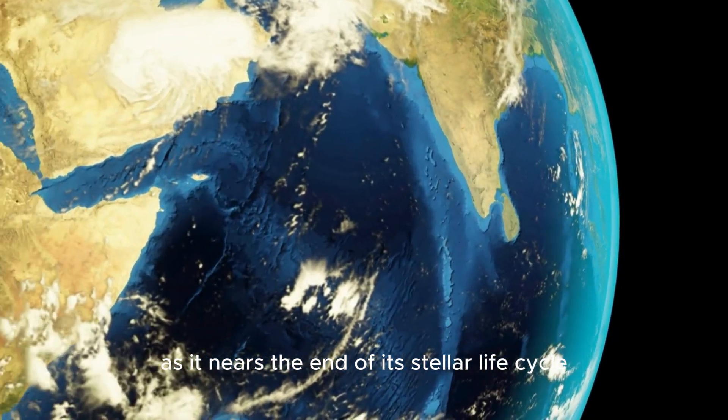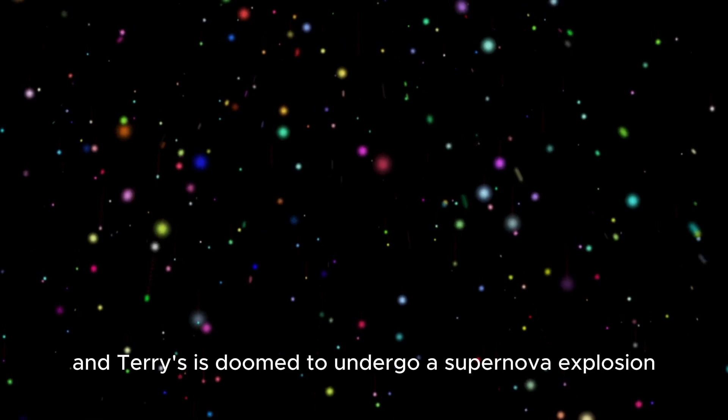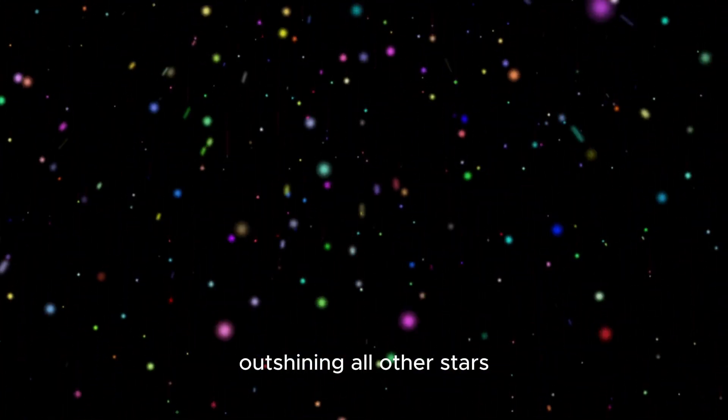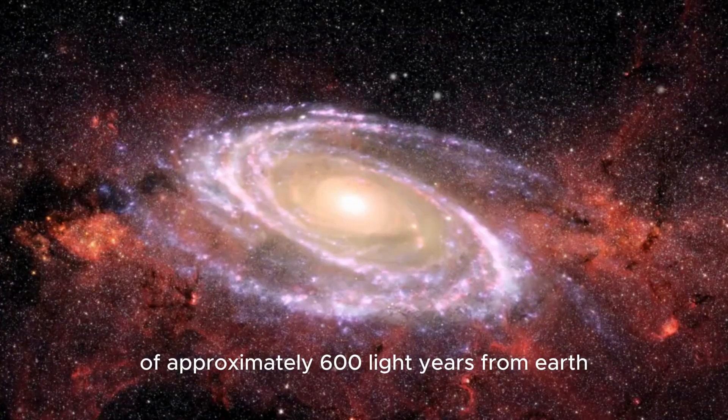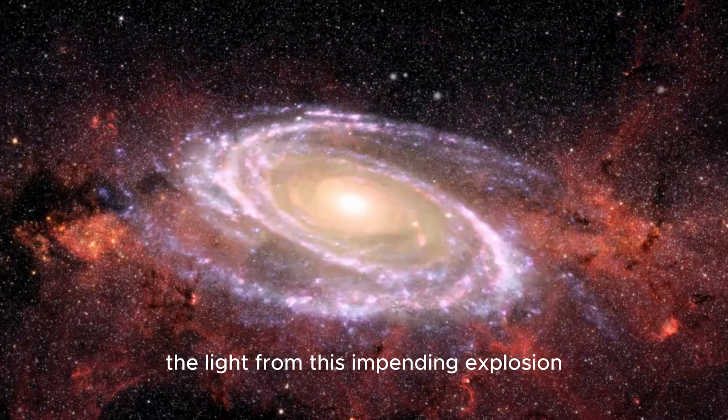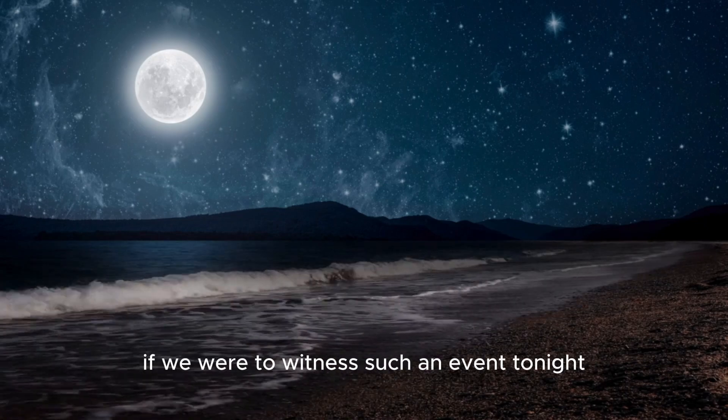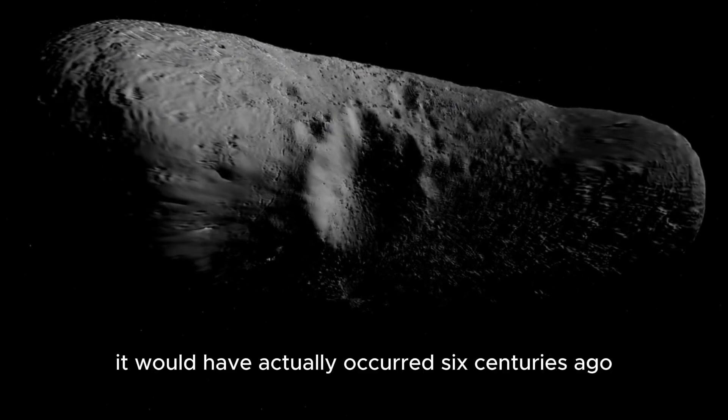As it nears the end of its stellar life cycle, Antares is doomed to undergo a supernova explosion, becoming the brightest star in our night sky, outshining all other stars. Despite its distance of approximately 600 light-years from Earth, the light from this impending explosion would take 600 years to reach us. This means that if we were to witness such an event tonight, it would have actually occurred six centuries ago.